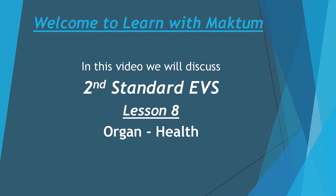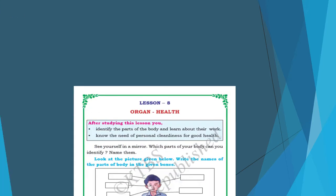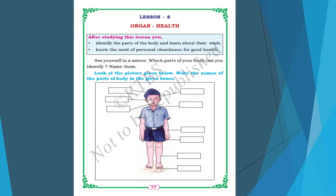Hope you remember, in first standard you have studied about the different parts of our body. The different parts of our body we call them as organs. Here in this chapter also we will identify the different parts of our body and learn about their work. We will also know the need of personal cleanliness for good health. You can stand in front of a mirror and identify the different parts of our body.